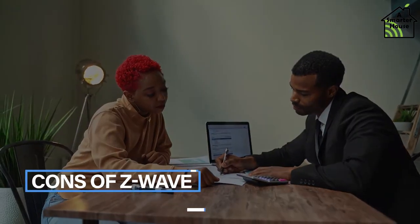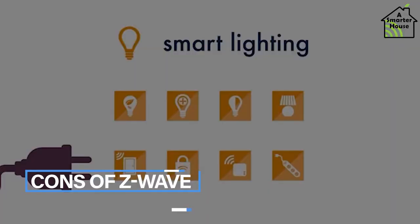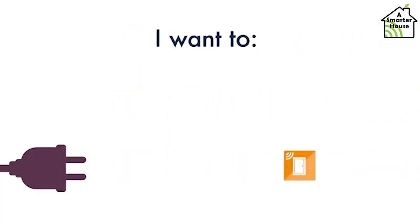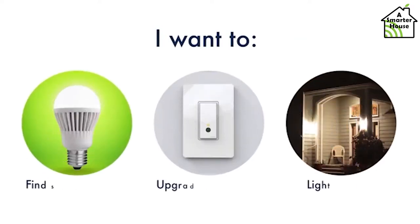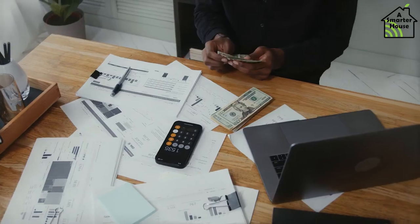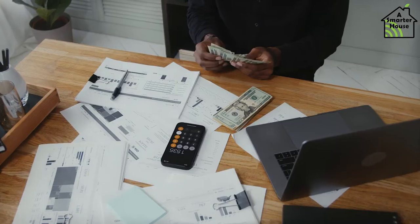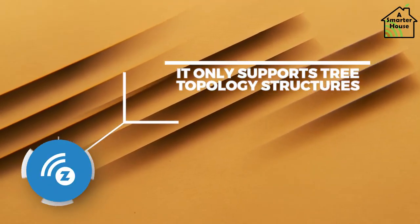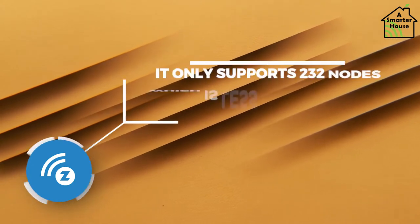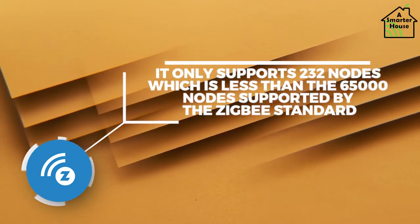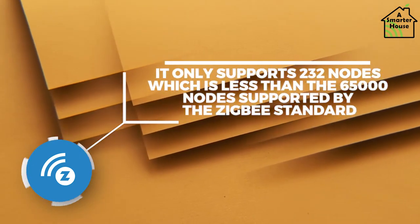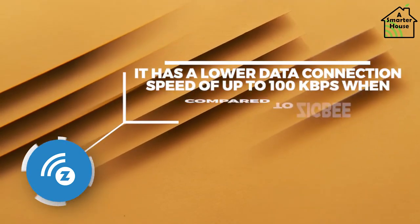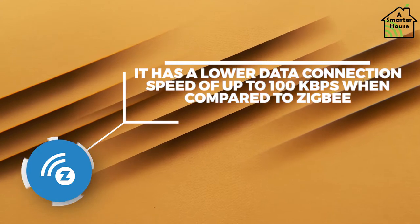Cons of Z-Wave: Because the coverage is limited, additional Z-Wave devices are required to cover a greater area. If more Z-Wave repeaters or routers are used, the overall cost rises. It only supports tree topology structures. It only supports 232 nodes, which is less than the 65,000 nodes supported by the Zigbee standard. It has a lower data connection speed of up to 100 kilobytes per second when compared to Zigbee.